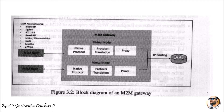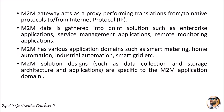The gateway consists of a native protocol, a protocol translation process, and a proxy. This M2M gateway can be either wired or wireless. The M2M gateway has native protocol support, protocol translation, as well as a proxy. From there, there is an IP address or IP routing through which the data can be transferred to particular servers. This M2M gateway acts as a proxy performing translations from or to the native protocols to or from the internet protocol.